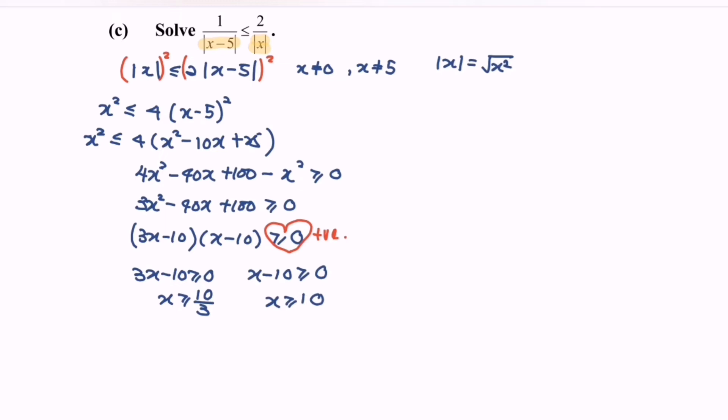So now I'm going to illustrate the situation in a number line. Then I'm going to locate the value. We will have 10 over 3 on the left and then 10 on the right. So do remember to take note, x cannot be equal to 0 and x cannot be equal to 5. So kindly locate the value 0 over here and 5 over here.